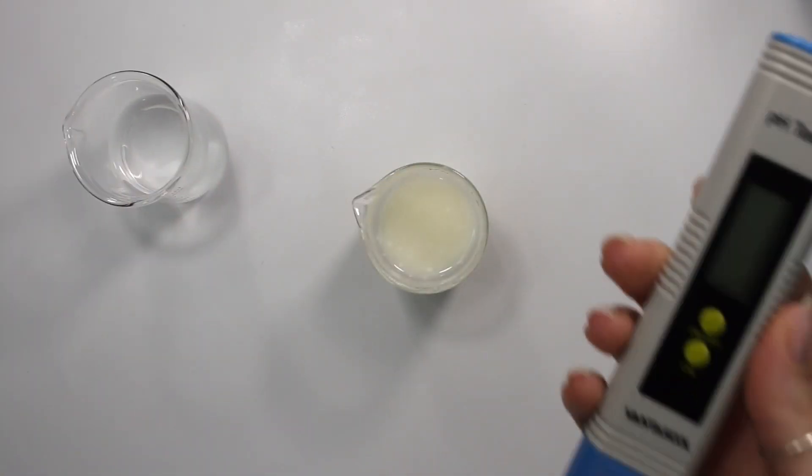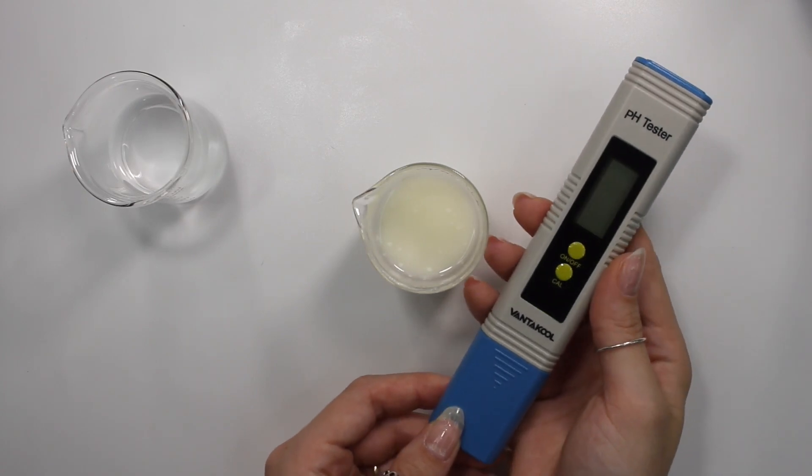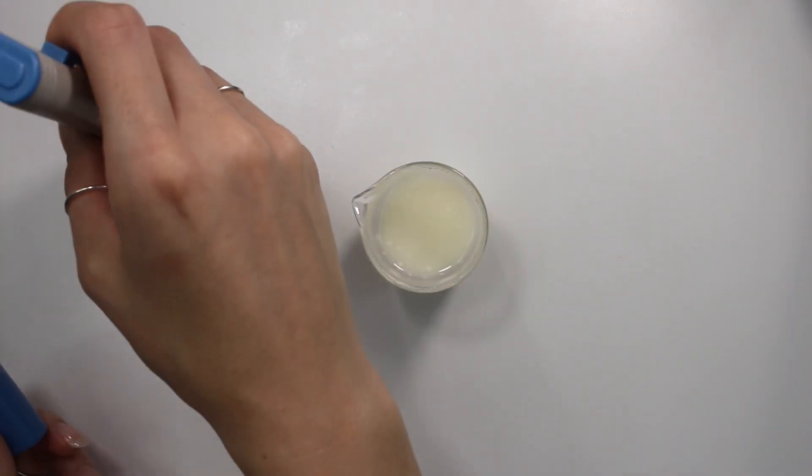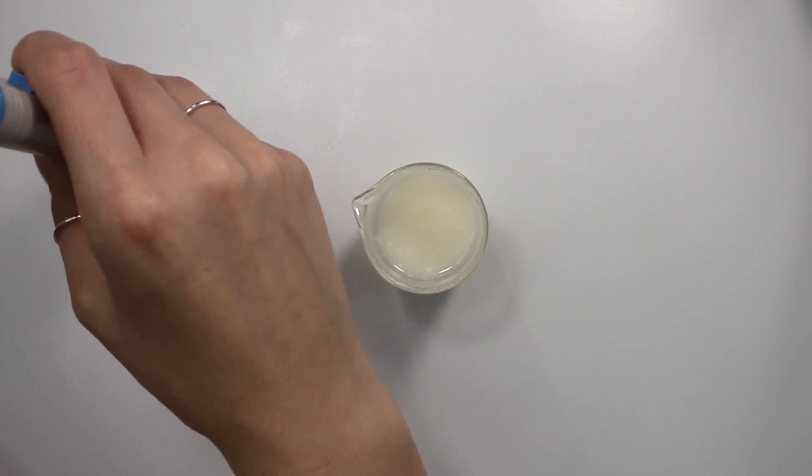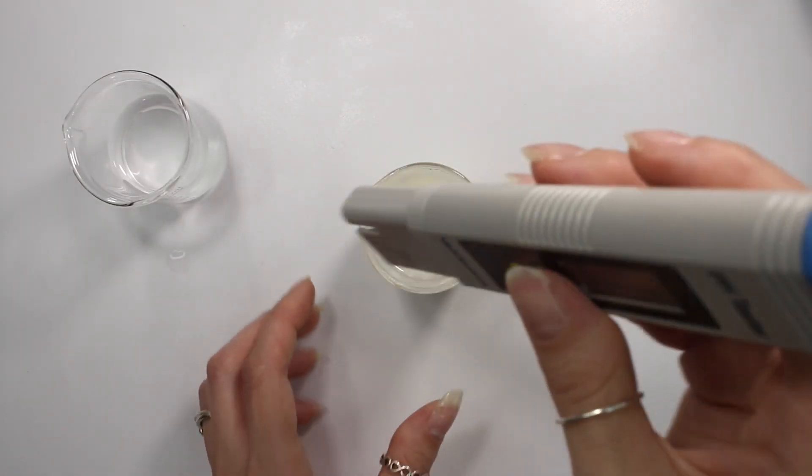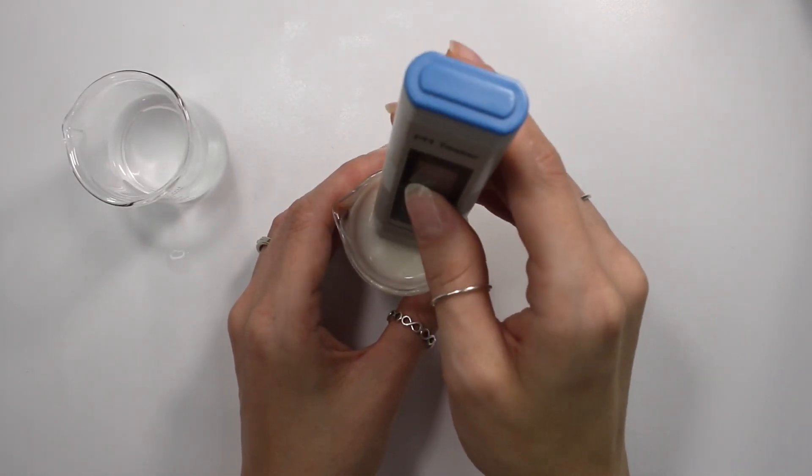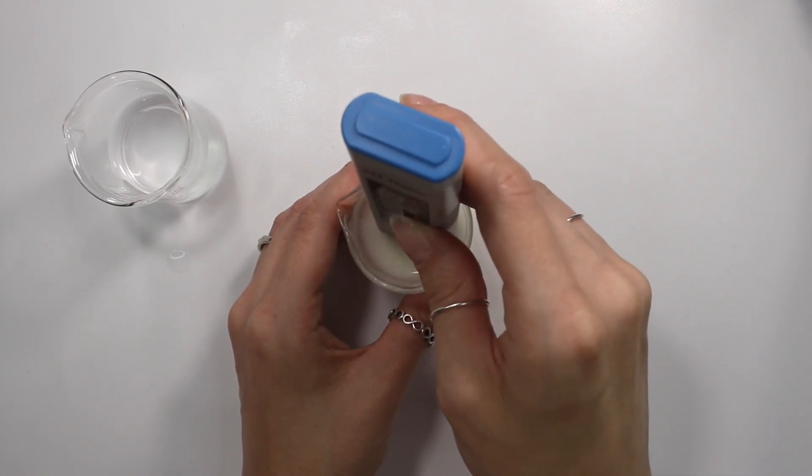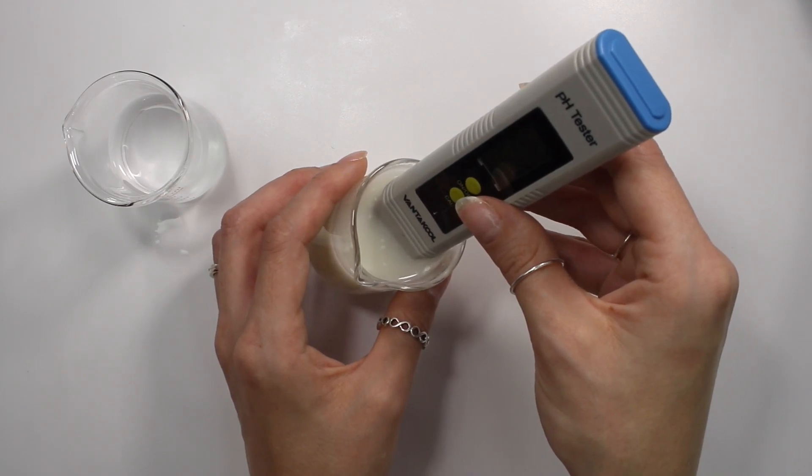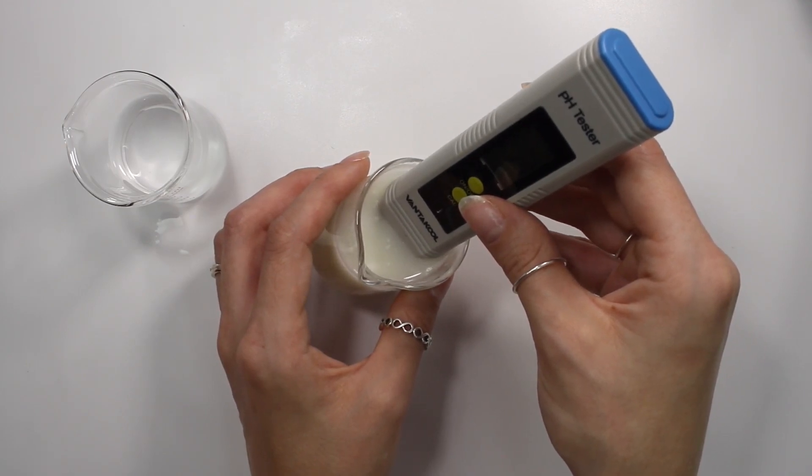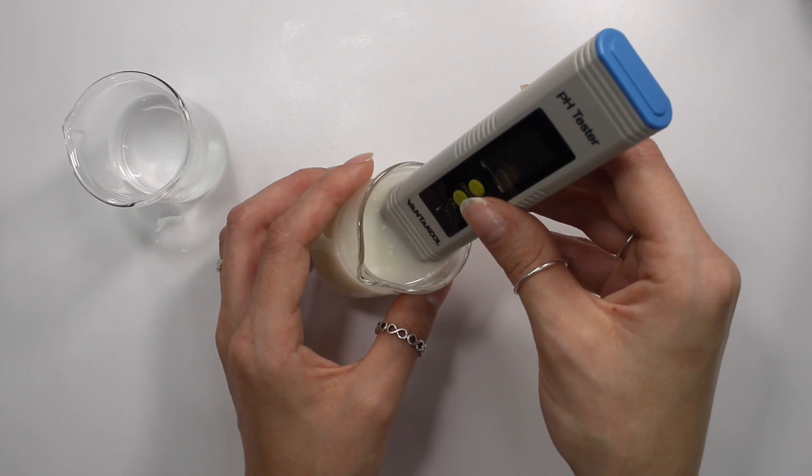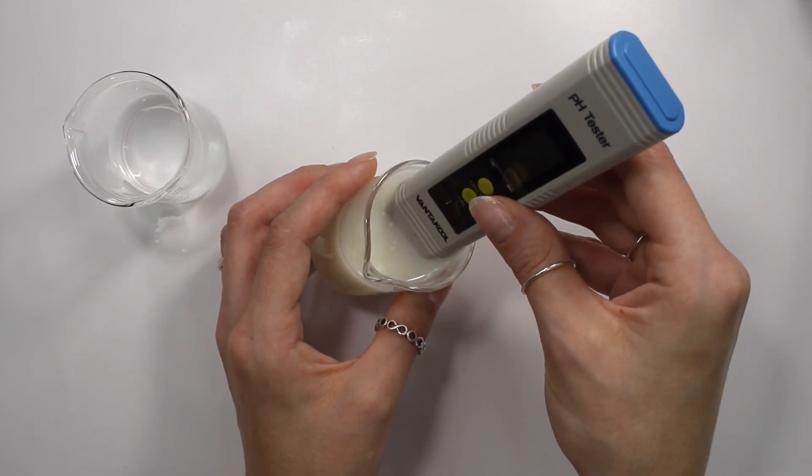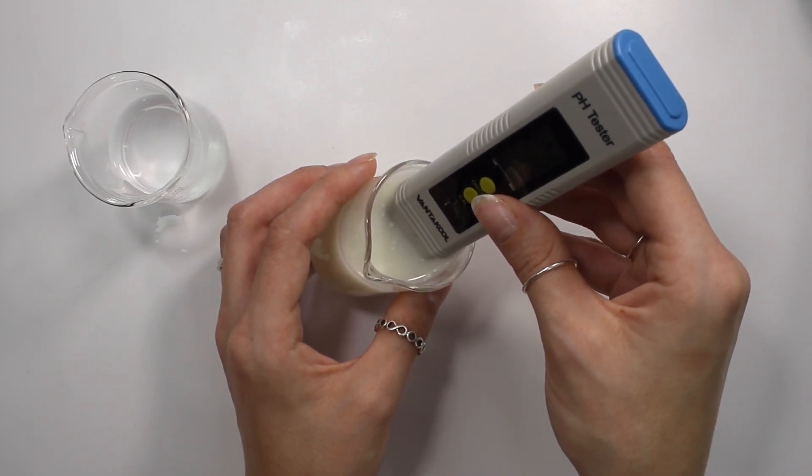And now I'm going to be using my cheaper pH meter to show you guys the pH of this one. So of course you want to rinse it in your distilled water first and then swish it around into your diluted cream solution for about a minute to make sure you get a stable pH reading. And this pH meter is reading a little different. I can't show it to you guys because I don't have a little hold button like the first pH meter does because this is cheaper.